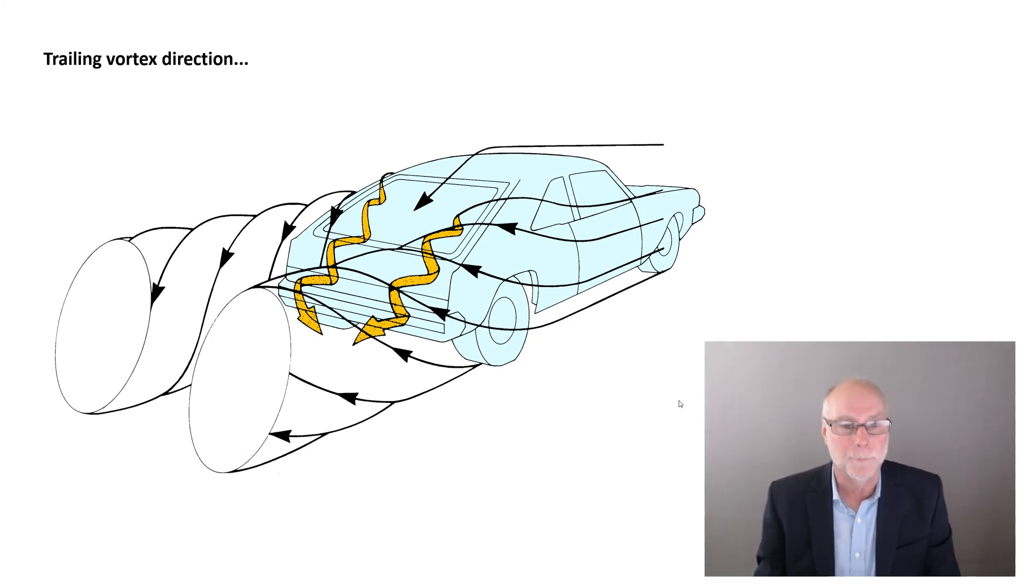It's an interesting approach. We used a paddle, a rotating paddle, suspended, pushed out the back of the car, and the direction of rotation of that paddle shows which direction that particular vortex is rotating in.